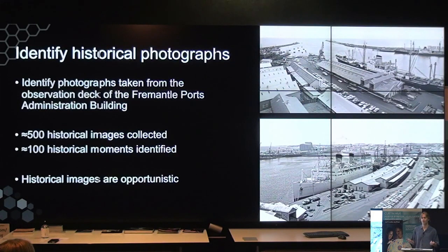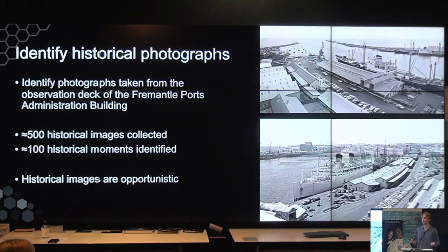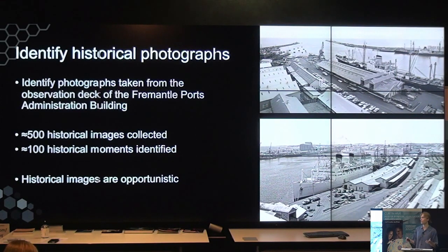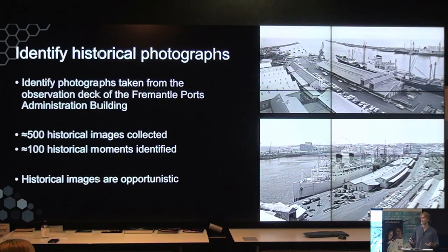The first step is identifying the historical photographs. During the internship I was given the privilege of looking through the photographic archive of the Fremantle Ports collection with permission from archivist Alan Pierce. Together we identified approximately 500 historical images taken from the observation deck, from which we identified around 100 historical moments. Most of the historical images were opportunistic and not of a panoramic nature, because film photography was very expensive at the time.